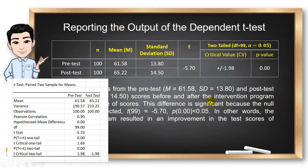For reporting the output of the dependent t-test, you can prepare a table containing the sample size, mean, standard deviation, test value, critical value, and the p-value, and the type of test.